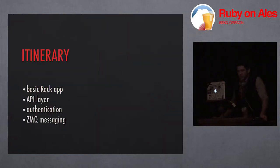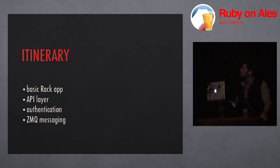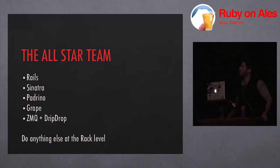Let's talk itinerary. What I'm looking to do here today is basically put together a quick basic Rack application, incorporate an API layer with Grape, throw some authentication in there and use OmniAuth, and then use ZeroMQ with DripDrop. The all-star team for this is Rails, Sinatra, and Padrino, which I happen to be very fond of right now.